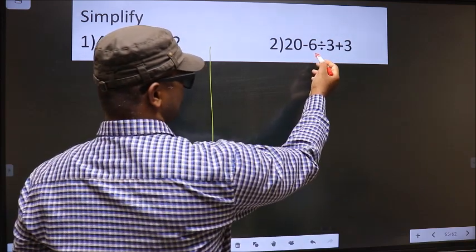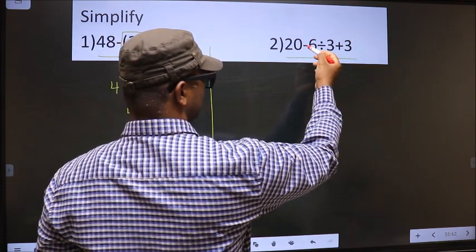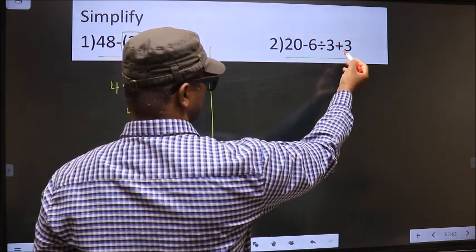20 minus 6 divided by 3 plus 3. Here in this expression, we have subtraction, division and addition.